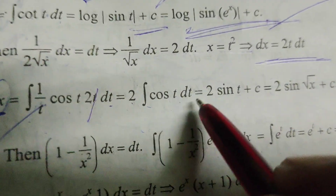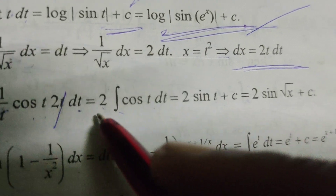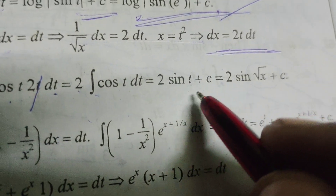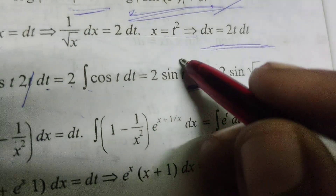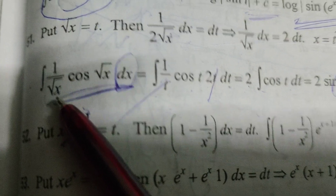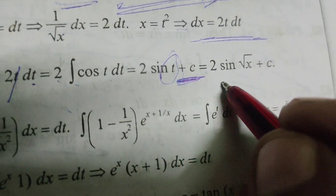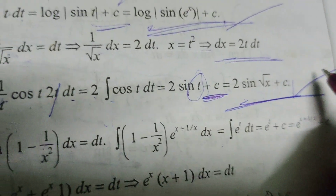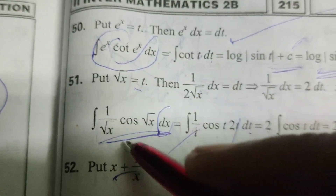2 integral of cos(t) dt. Now, 2 into integral of cos(t) gives 2·sin(t) + C after integrating and adding the constant. In place of t, substitute √x. Therefore, 2·sin(√x) + C. This is the solution to this evaluated integral.